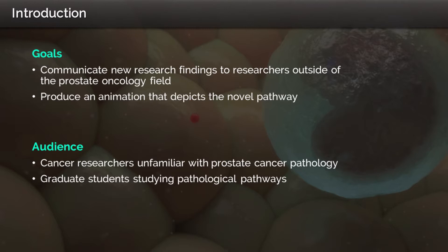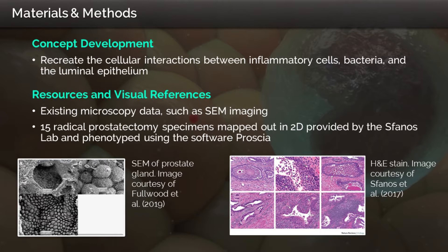The first goal of this thesis was to effectively communicate the complexity of recent evidence to graduate students and researchers outside of the prostate oncology field. The second goal was to produce an animation, because histology translated into animation is easily understood by those not used to looking at cancer solely through the microscope. The key concepts emphasized were the cellular interactions between inflammatory cells, bacteria, and luminal epithelial cells. Visual references provided included high-resolution scanning electron microscope imaging, and histology data from 15 radical prostatectomy specimens provided by the Sphenos Lab, accessed using Procia, a pathology viewing software.